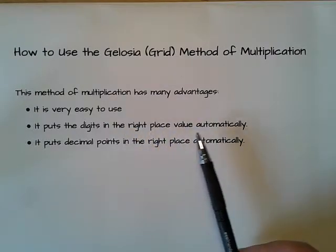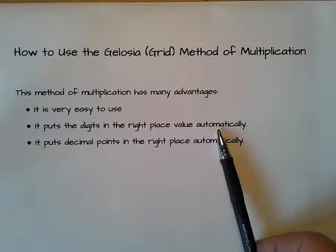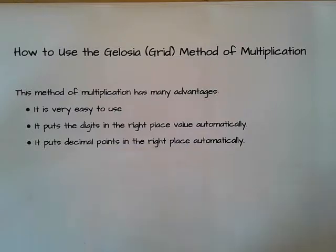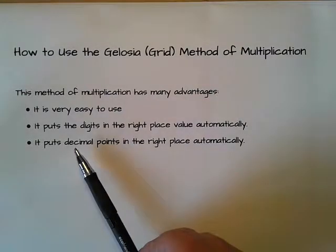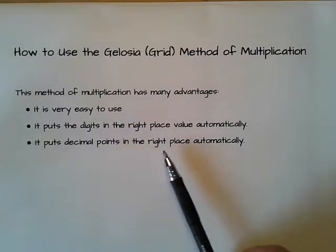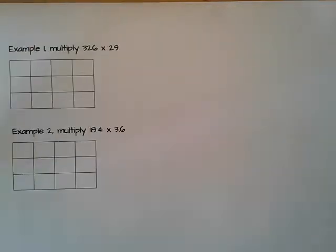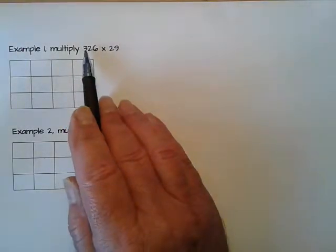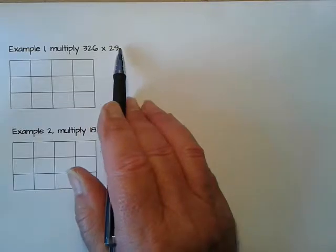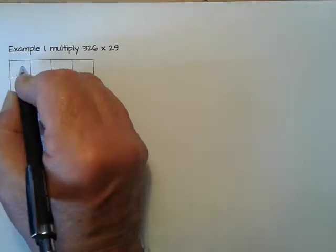If you're multiplying decimal numbers, it also puts the decimal points in the right place automatically. So let's look at a couple of examples. Example one: I'm going to multiply 326 by 29. I write 326 here and 29 down there.